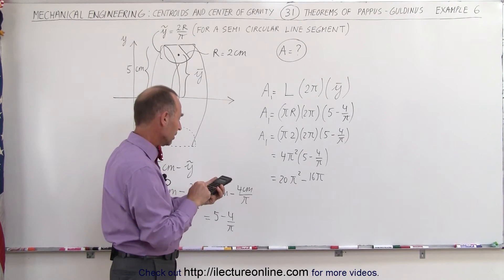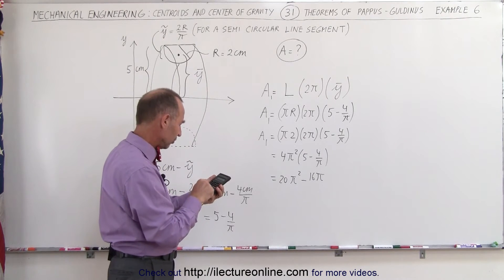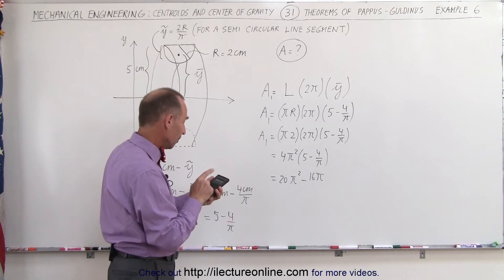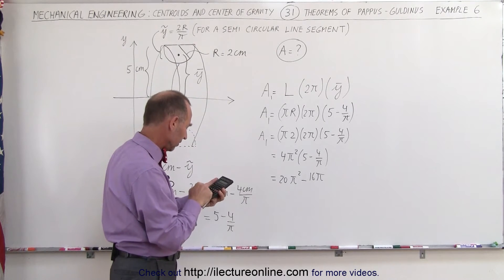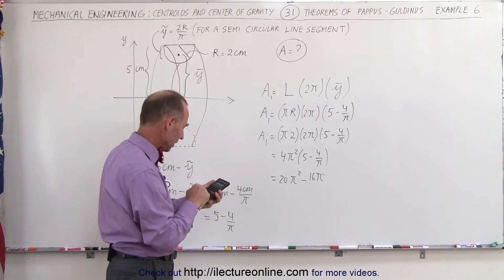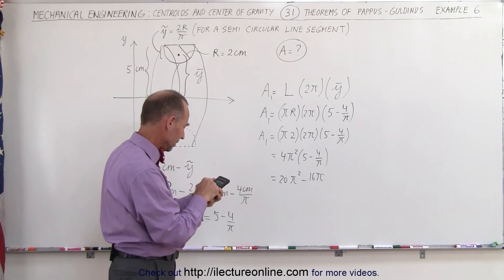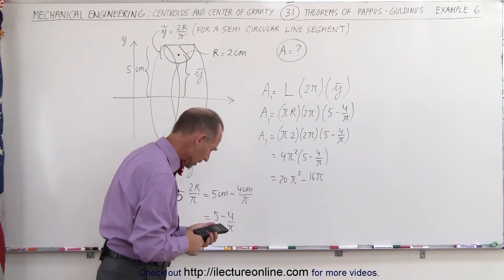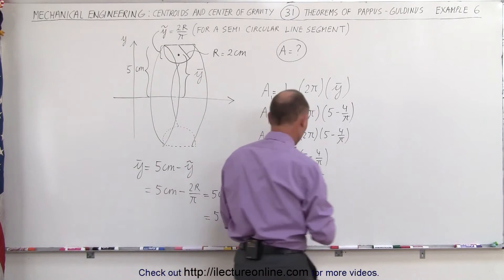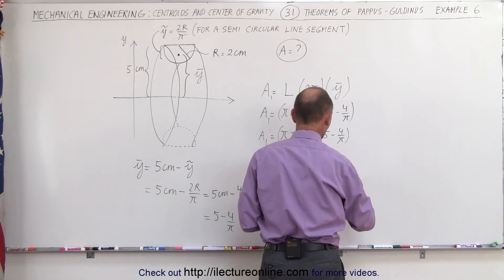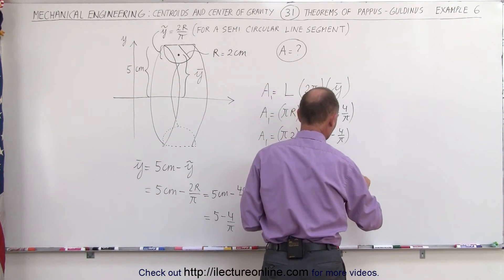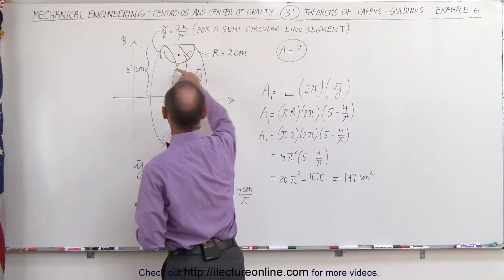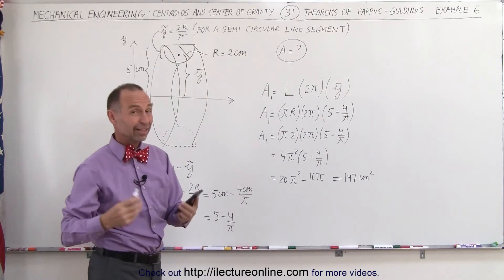Computing: π² times 20 minus 16 times π equals approximately 147 square centimeters. So A1 is 147 cm², but that's only for the curved portion — we have to add to that to get the full surface area.